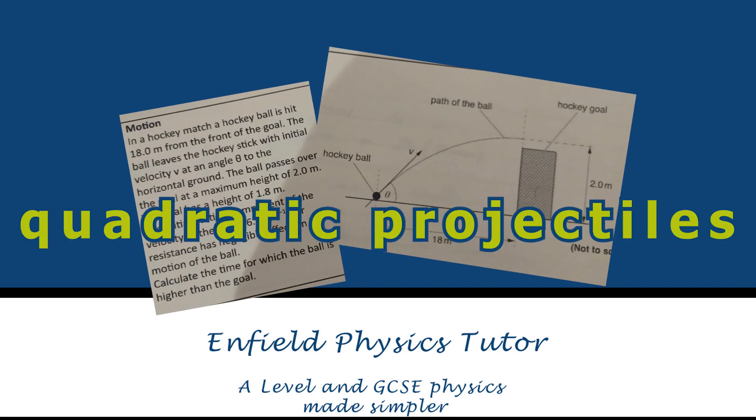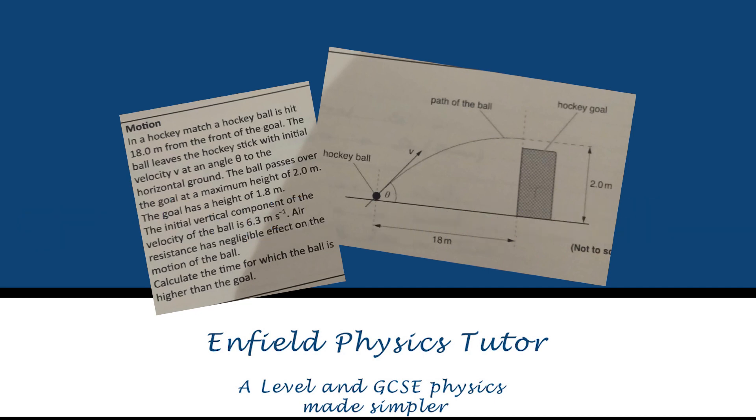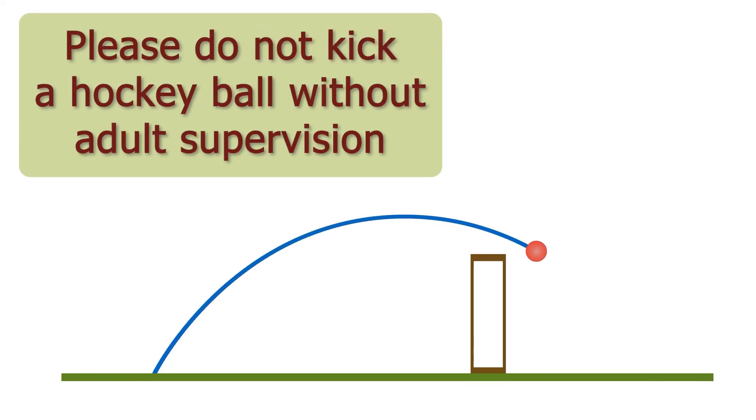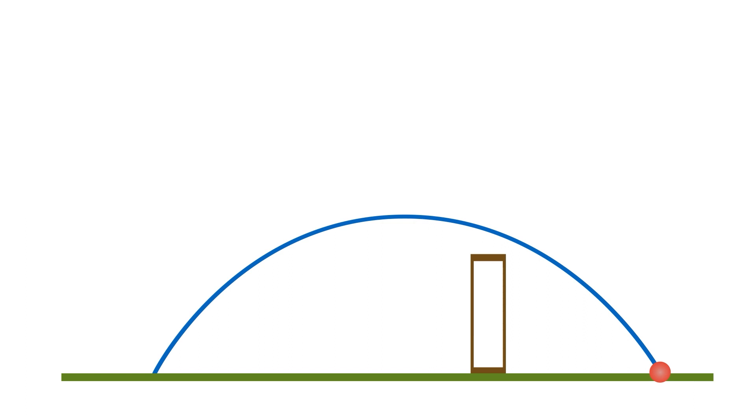This morning one of my year 12 students asked for help with this question in a tutoring session and it's such a good one I thought I'd do it online for us all to see. So here we go, we have a hockey ball that's being kicked or hit into a parabola, there's always a parabola isn't it.